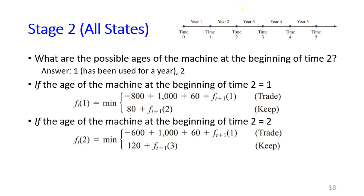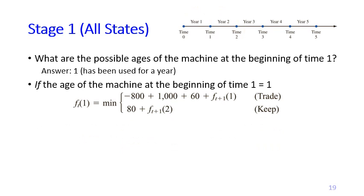At stage two, which means we are at time point two, the recursion formula is still the same — we have F_t(1) and F_t(2) with t equals 2. However, we do not have F_t(3) because time two is only two years from the beginning of the problem, so it is impossible to have a three-year-old machine. At stage one, we only have F_t(1), because it is just one year from the beginning, so the only possible age of the machine is one year old.